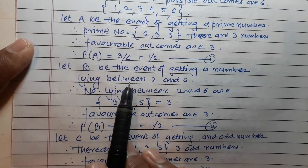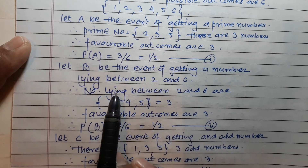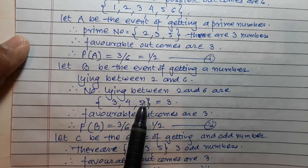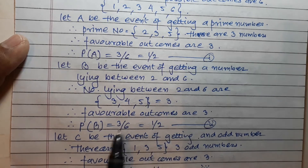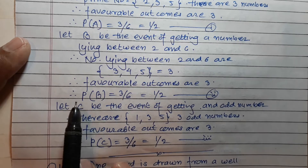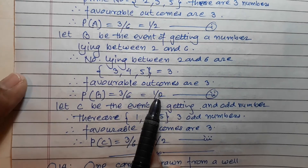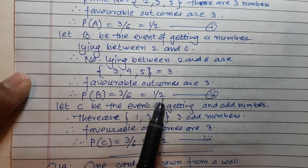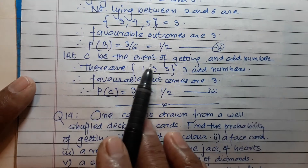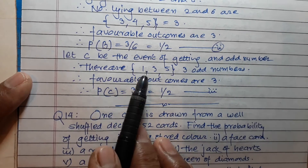Let B be the event of getting a number lying between two and six. Numbers lying between two and six are three, four, five. Favorable outcomes are three, and therefore P(B) is equal to three upon six, that is equal to one upon two. Answer number two.